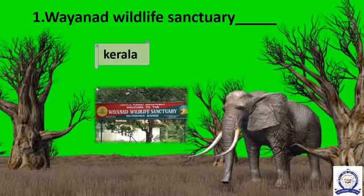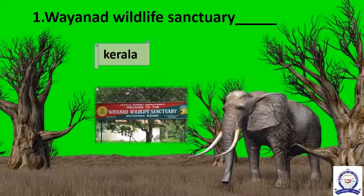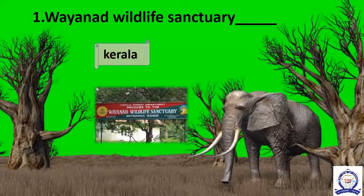Write the names of the states or union territories in which these wildlife sanctuaries are located. The first sanctuary is Wayanad Wildlife Sanctuary. The Wayanad Wildlife Sanctuary is an animal sanctuary in Wayanad, Kerala, India. A variety of large wild animals such as Indian bison, elephant, deer and tiger are found here. There are also quite a few unusual birds; peafowl tend to be very common in the area. The Wayanad Wildlife Sanctuary is the second largest wildlife sanctuary in Kerala.